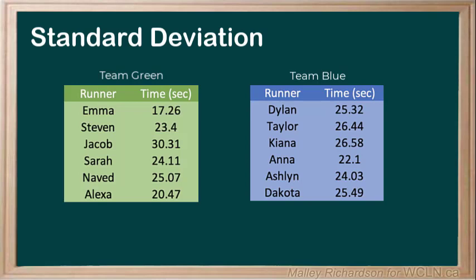The green team had Emma running at 17.26 seconds, Steven with 23.4 seconds, Jacob with 30.31 seconds, Sarah with 24.11 seconds, David with 25.07 seconds, and Alexa finished the race at 20.47 seconds.